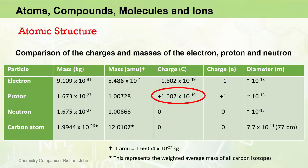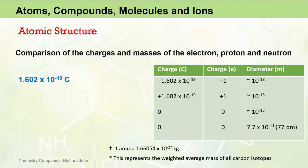The value of 1.602 by 10 to the minus 19 coulombs is referred to as the electronic charge and is given the symbol E. Now this number is too small and inconvenient for everyday use, and for this reason the charges on atomic and subatomic particles are generally expressed in multiples of this value.